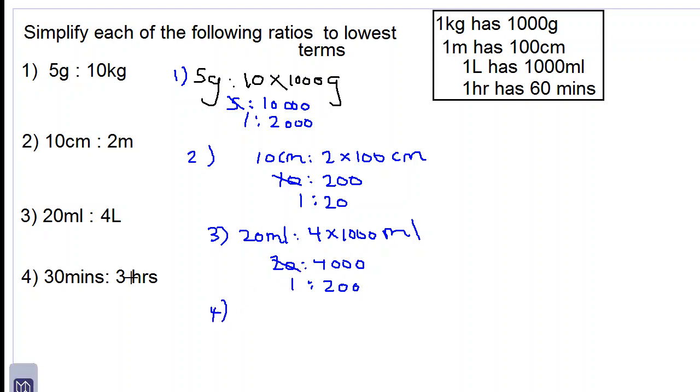30 minutes to 3 hours. We have 30 minutes to 3 hours. 3 hours is the same as saying 3 times 60 minutes. So we have 30 to 180. Divide by 30 on both sides and we get 1 to 6.